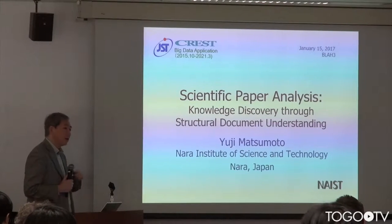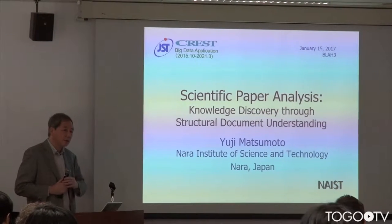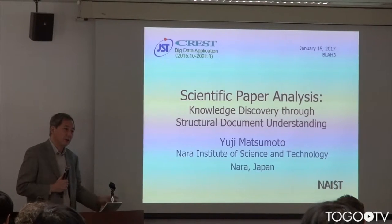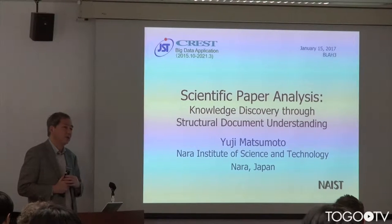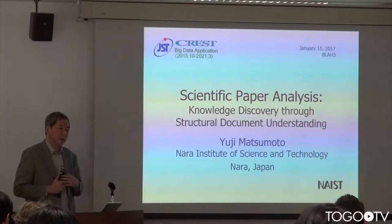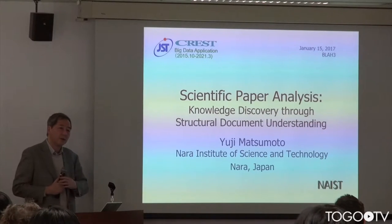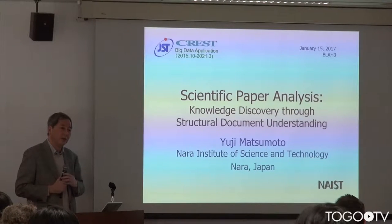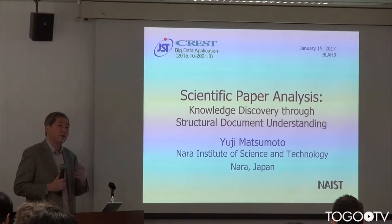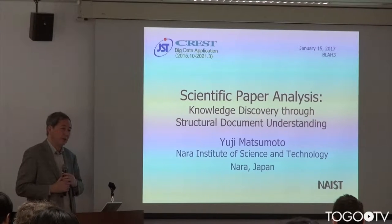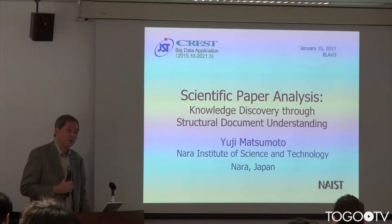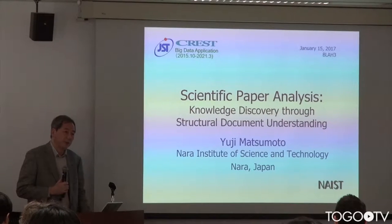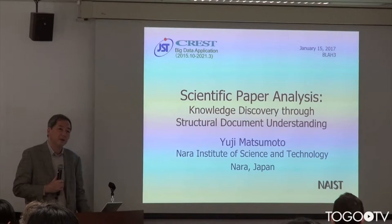NICE is a kind of university, but we have only graduate schools — three in total. One is information science, our school, and the other two are biological science and material science. We started some collaboration with them, and their main request was to analyze scientific papers because the publication size in those areas — biological science and material science — is actually much bigger than in our field.